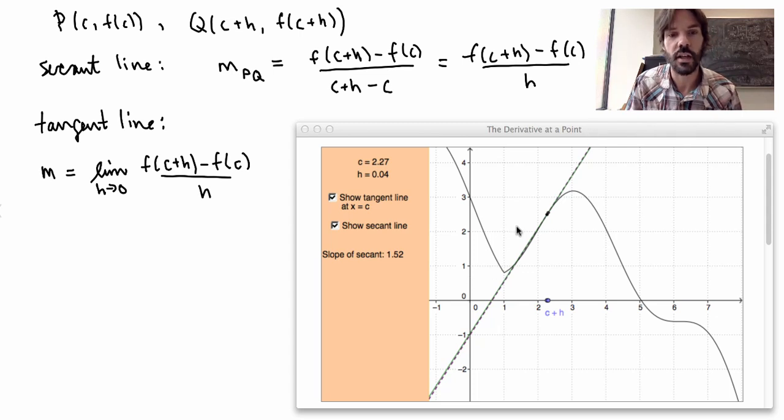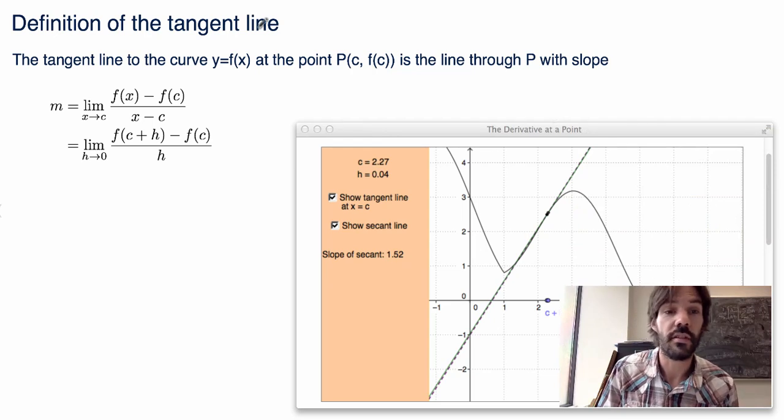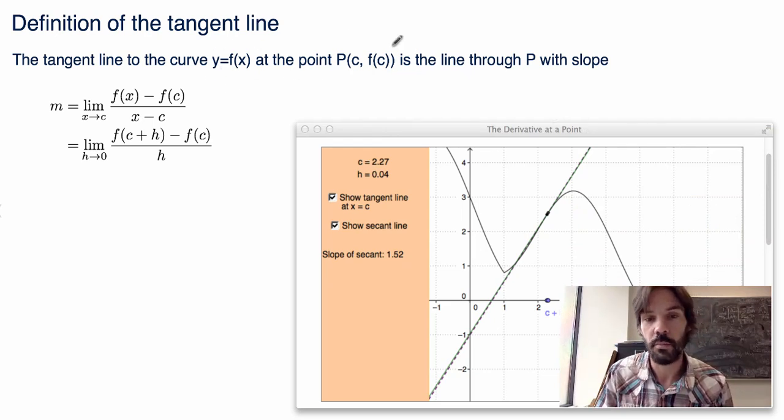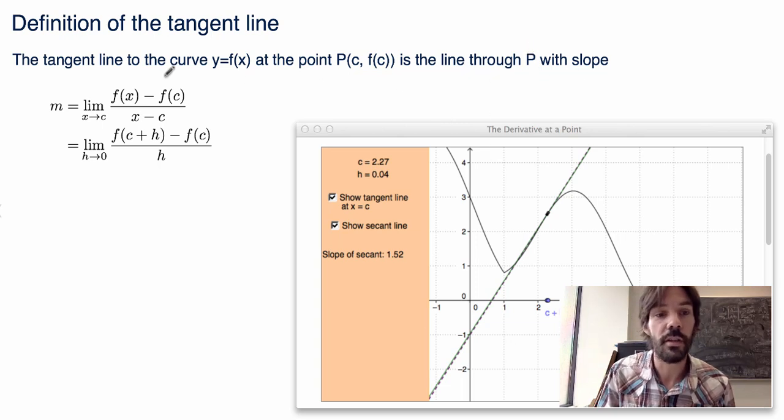This gives me the equation for the tangent line, for the slope of the tangent line here. Okay, so let me formalize that. So the definition of the tangent line to a curve y=f(x) at a given point P is the line that goes through this point with slope given by the expression that I had here.